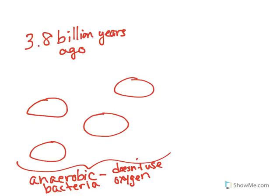So if we look back about 3.8 billion years ago, there's some fossil record evidence that suggests that we had anaerobic bacteria. In other words, these bacteria did not use oxygen. It's a very simple form of bacteria.